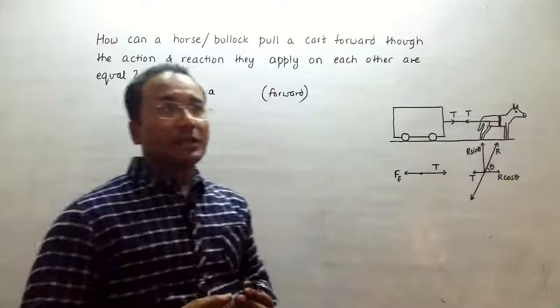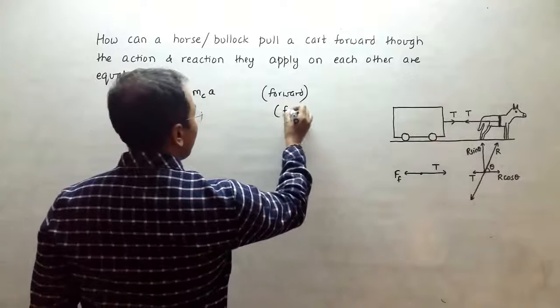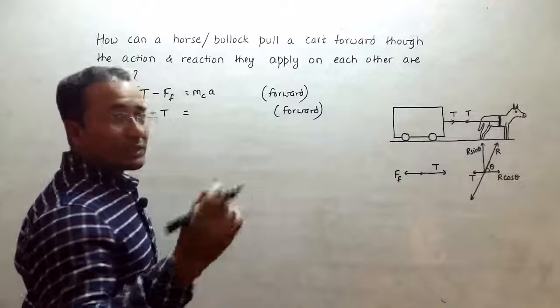If you can make the reaction R cos theta more than T, then it can create some acceleration. So in such case, we have the resultant force as R cos theta minus T, which will also be in forward direction if it can make R cos theta more than tension force T. So this will be equal to mass of the horse into its acceleration.